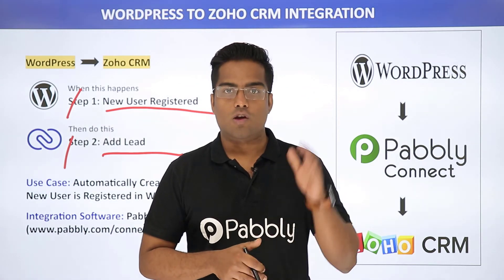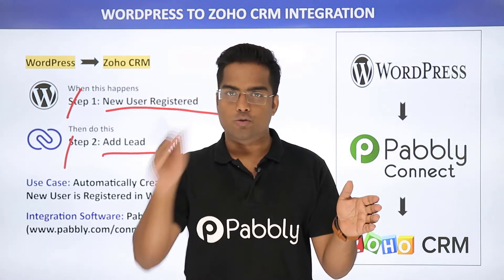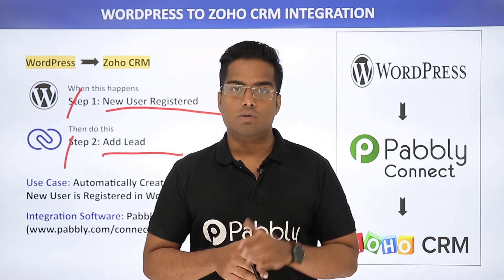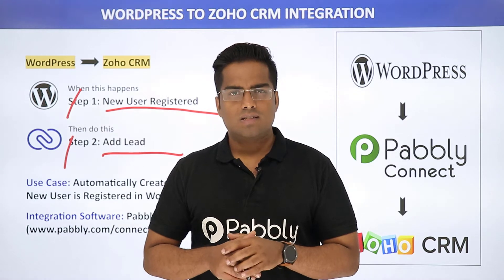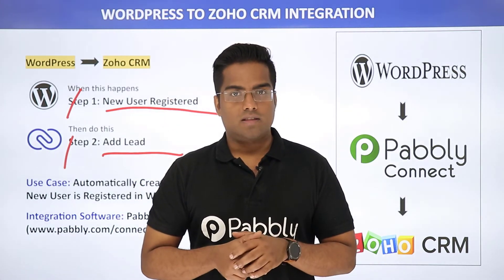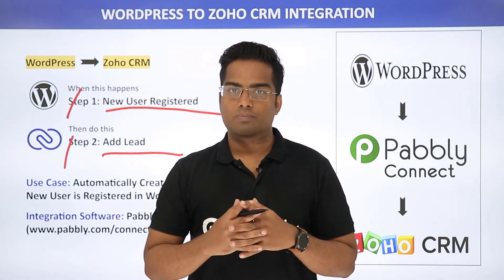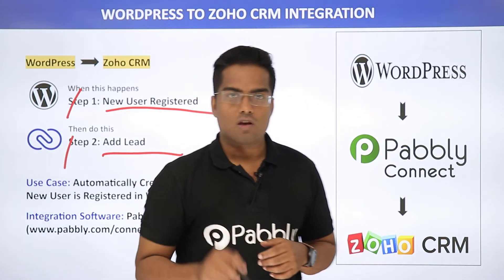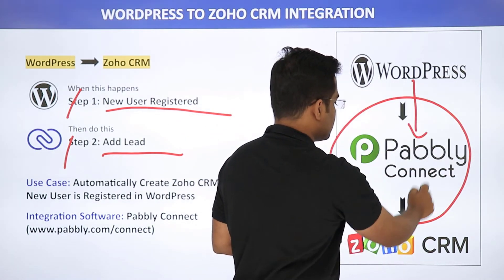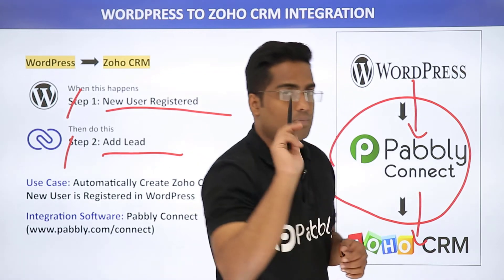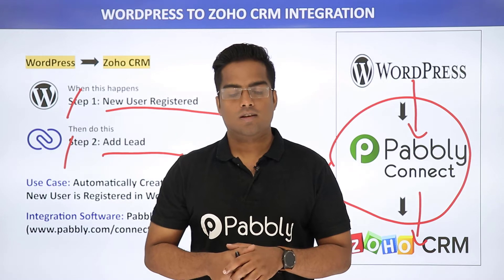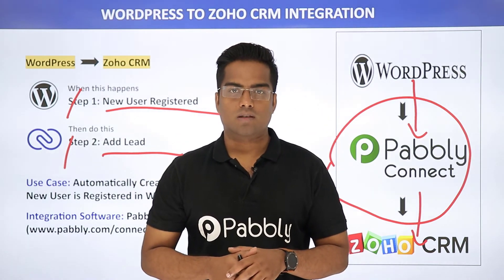We are going to send the data from WordPress to Zoho CRM. There is one minor problem — there is some kind of integration between WordPress and Zoho CRM, but this native integration is actually very limited. In cases like these, we need to bring a third app to properly connect them both. In this video, we will be using PubliConnect to integrate WordPress and Zoho CRM, and the best part is there is no need for coding skills or programming knowledge.